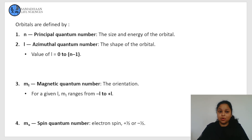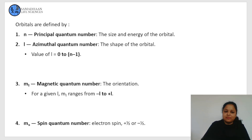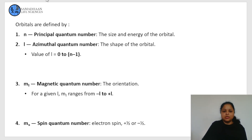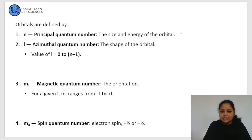Let's discuss about orbitals. Orbitals are the region where probability of finding an electron is maximum. Orbitals are defined by four different quantum numbers. First is n, the principal quantum number, which tells us about the size and energy of the orbital, and n can be integers like 1, 2, 3, etc.